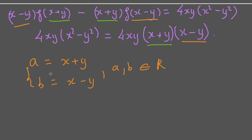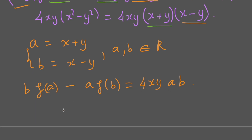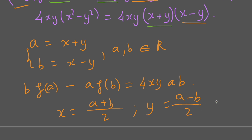From the substitution variables, we rewrite the equation. We get p multiplied by f(a) minus a multiplied by f(p) equals 4xy multiplied by a and p. We also have x equal to (a plus p) over 2, and y equal to (a minus p) over 2. Then we replace these expressions into the equation.